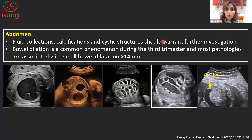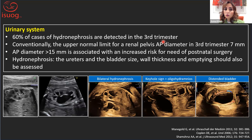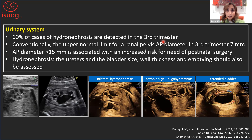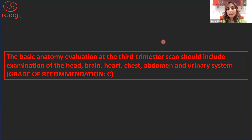Bowel dilatation in many cases will be associated with polyhydramnios. For the urinary system, we need to demonstrate the normal appearance of both kidneys and the bladder — more than half of hydronephrosis cases are detected in the third trimester. The cutoff for the anteroposterior diameter of the renal pelvis is 7 mm in the third trimester; severe hydronephrosis is defined as an anteroposterior diameter of more than 15 mm, which is usually predictive of the need for postnatal surgery. Therefore, the basic anatomy evaluation in the third trimester should include examination of the head, brain, heart, chest, abdomen, and urinary system.